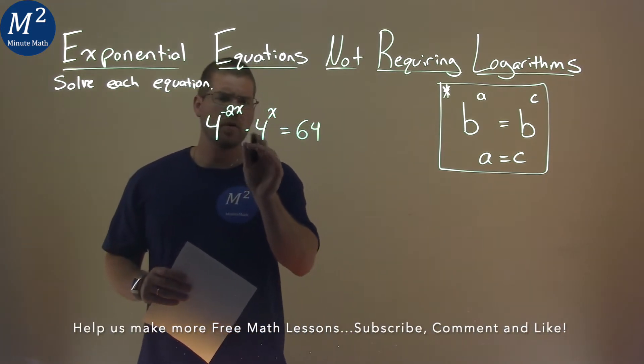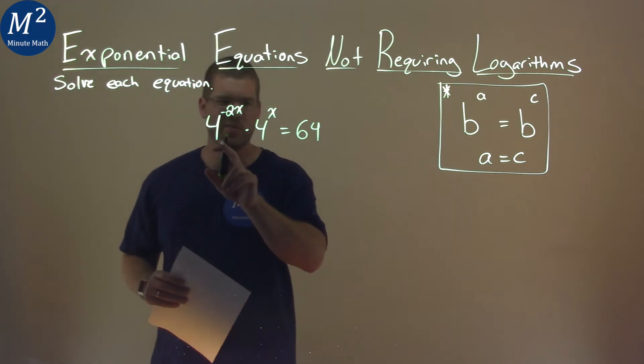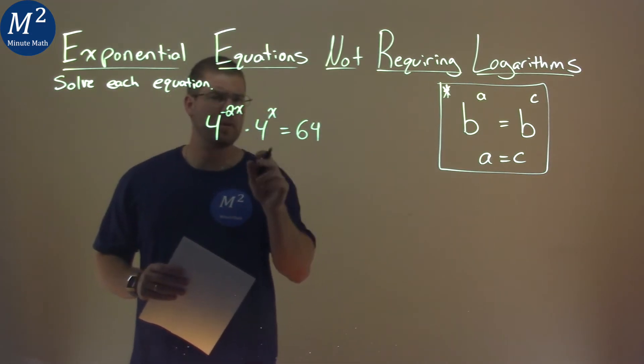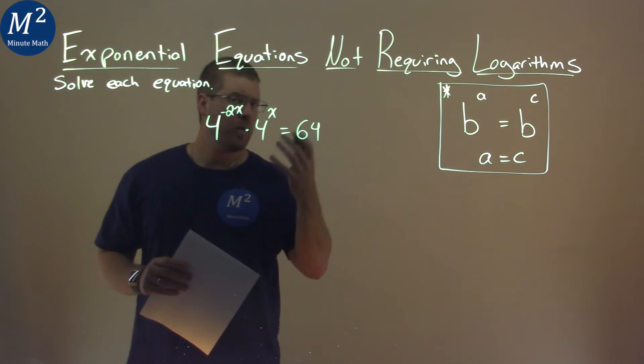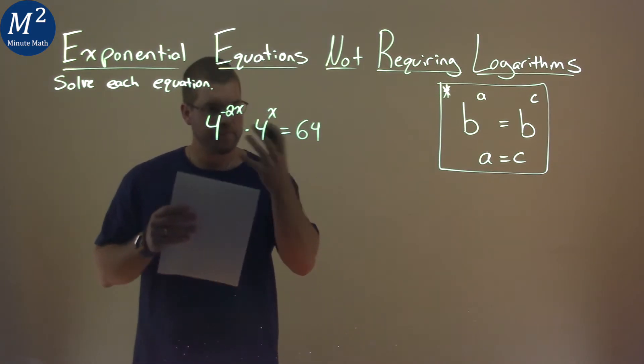Well, notice this multiplication that's going on right here between the 4 and the 4. Now, they have exponents, but we have the same base. When this happens, we can combine this to be one problem, one part.